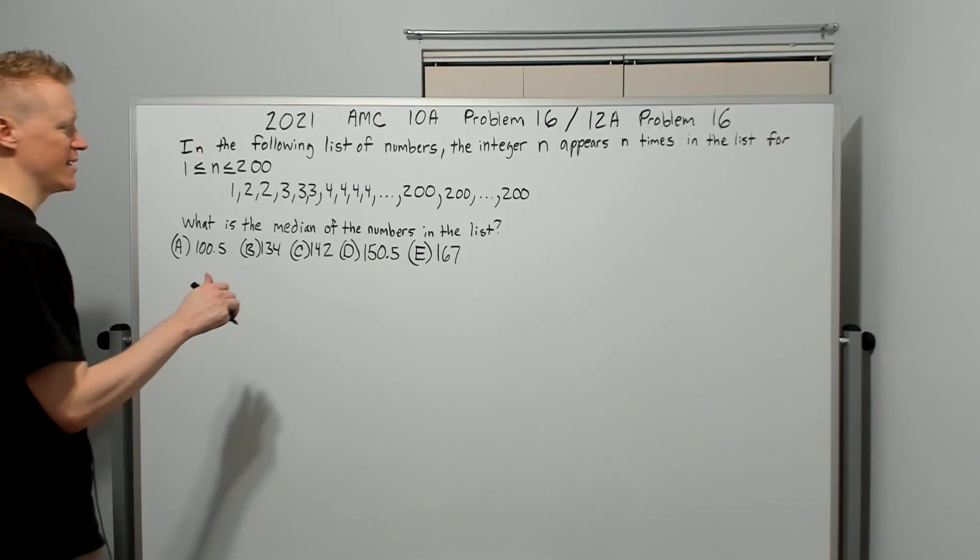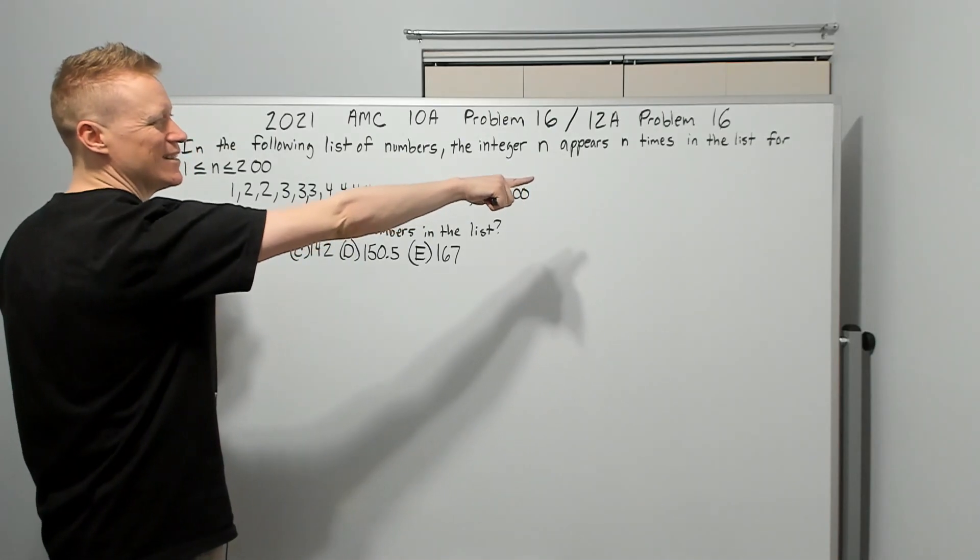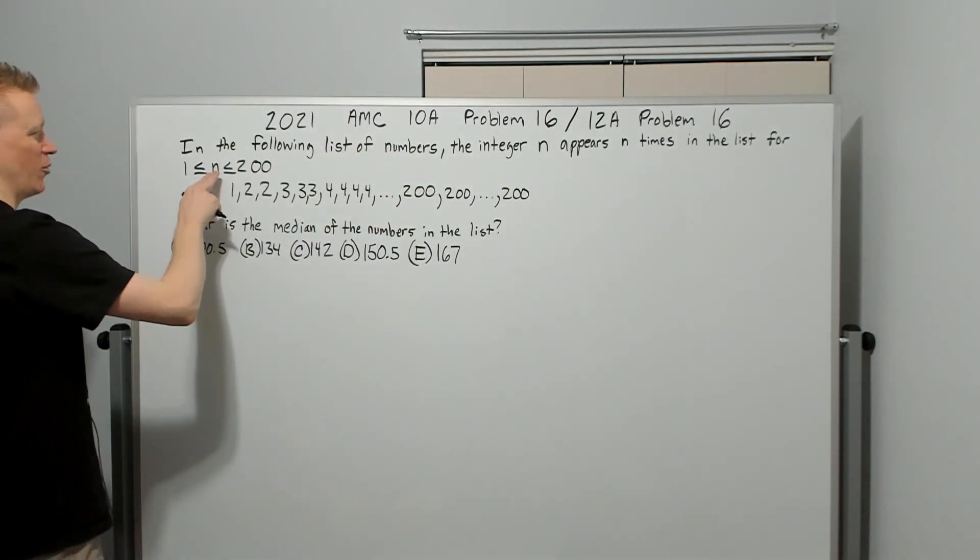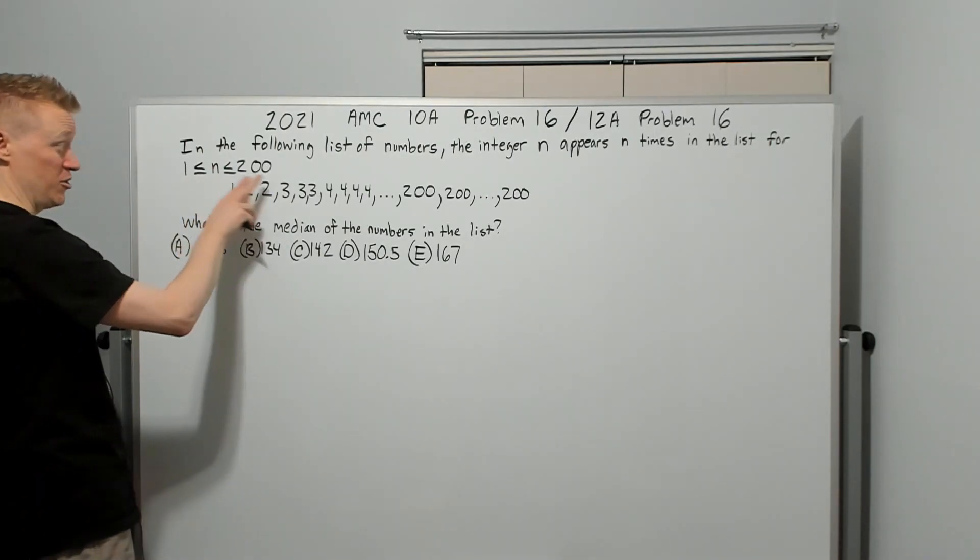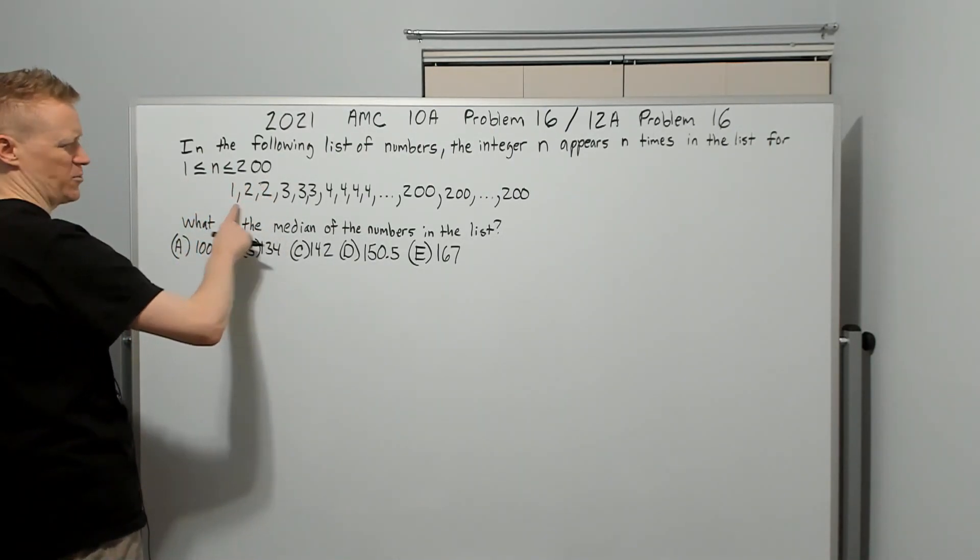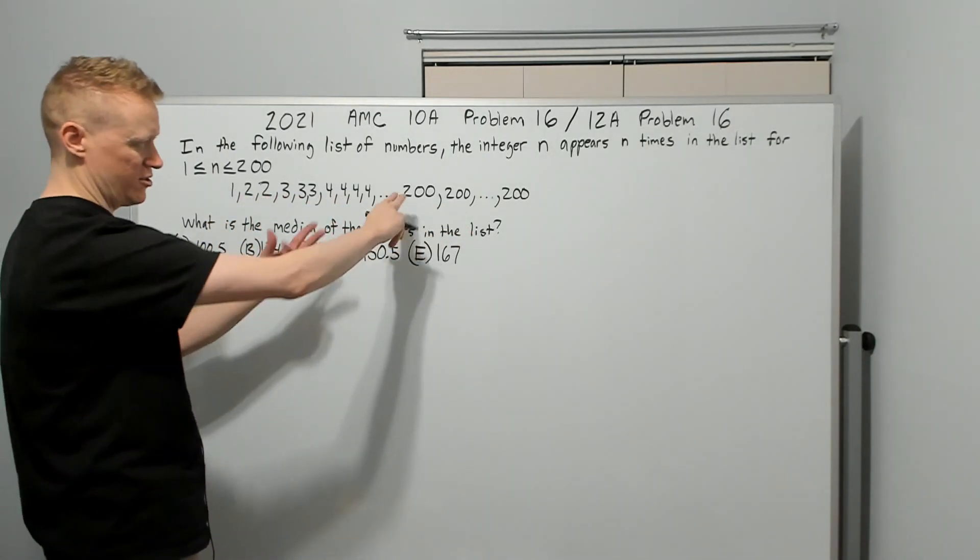In the following list of numbers, the integer n appears n times in the list for n between 1 and 200 inclusive, which is how you should read that. This is what it looks like: there's one 1, there's two 2s, there's three 3s, four 4s, and 200 two-hundreds.